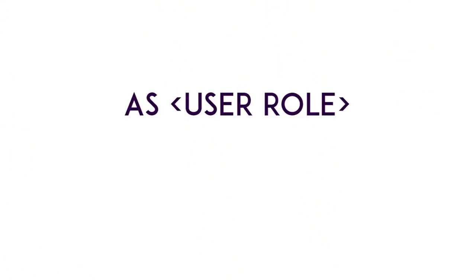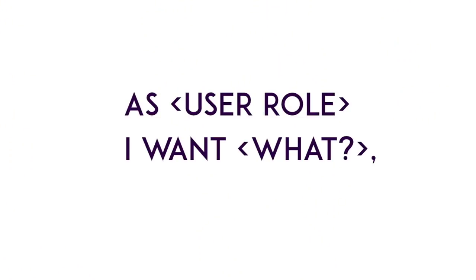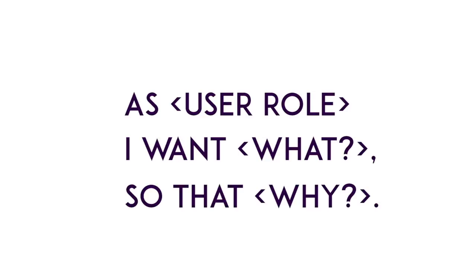The syntax is simple. It goes: as a blank — which is a role — I want to blank — which says what — and then so that I can blank — which is the why. Why do you want to do the what?